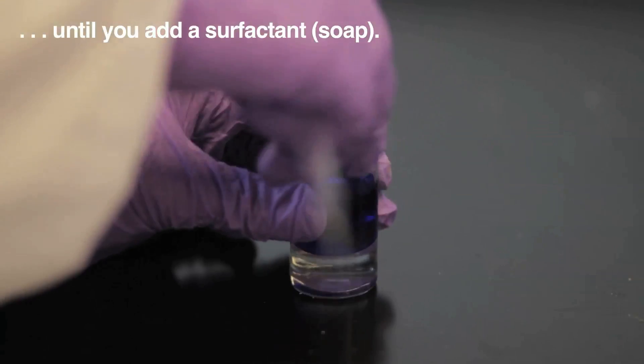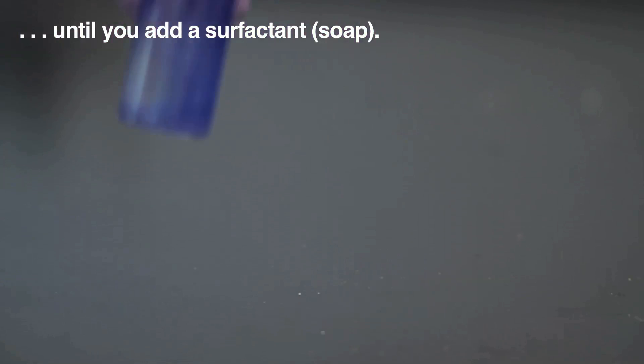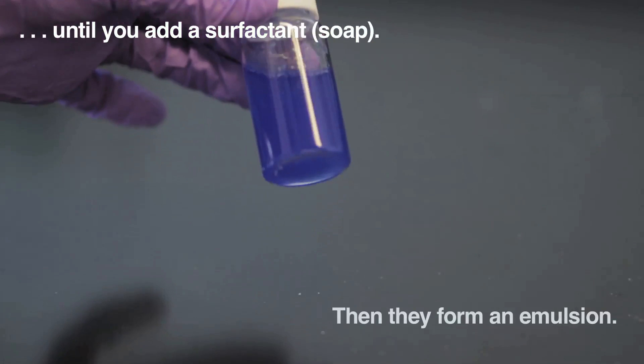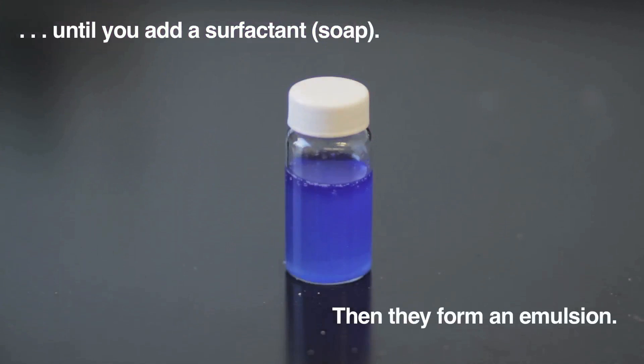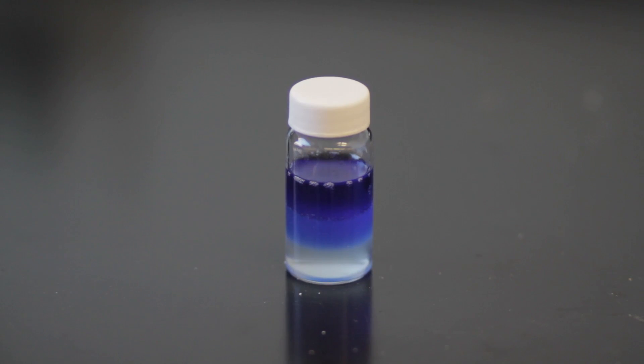For instance, a double emulsion is one liquid inside another liquid inside a third liquid, and we're focusing on figuring out ways to actually reconfigure these droplets. So for instance, a double emulsion you might be able to turn it inside out, so the inner liquid is now the outer liquid or the reverse.